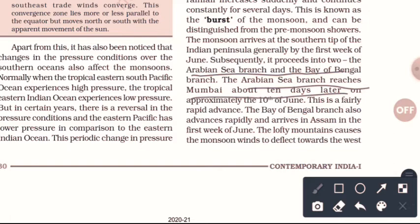This is a fairly rapid advance. The Bay of Bengal branch also advances rapidly and arrives in Assam in the first week of June.